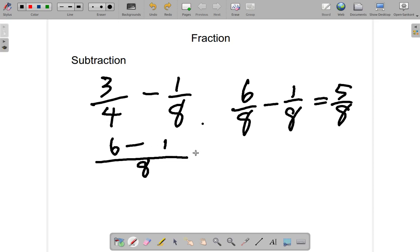6 minus 8 into 8 is 1 times 1. 6 minus 1 is 5. So, you have 5 eighths. Alright?